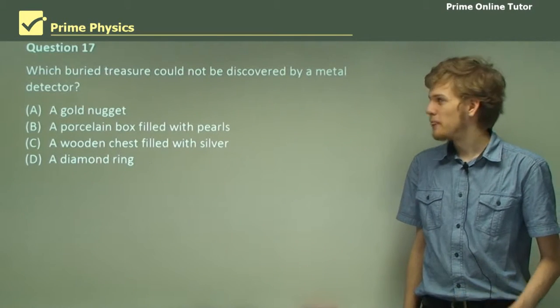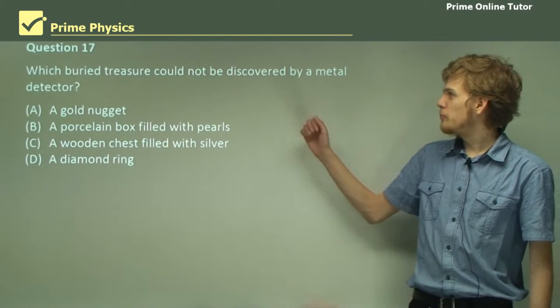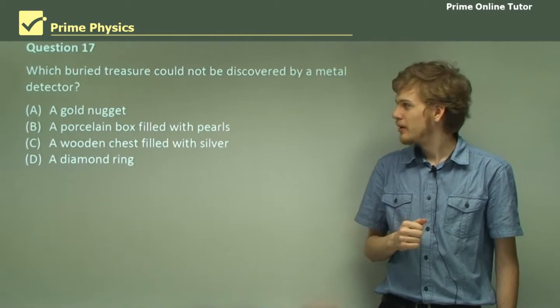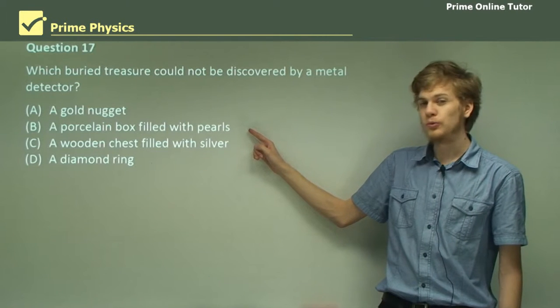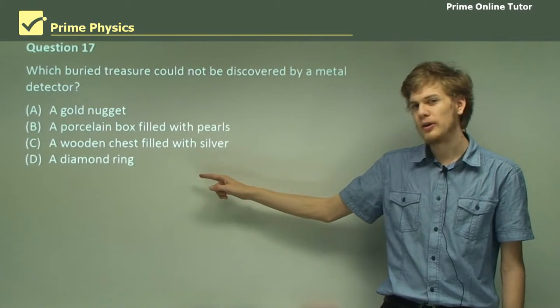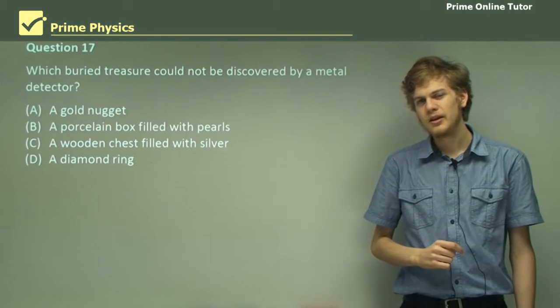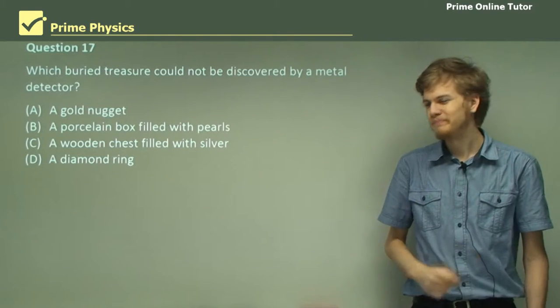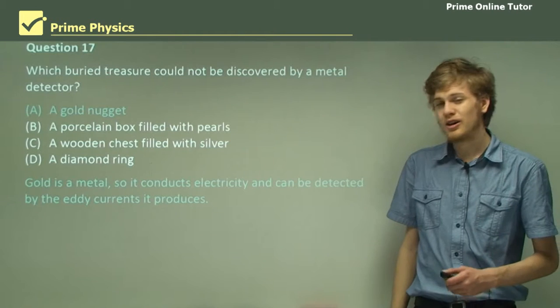Question 17. Which buried treasure would not be discovered by a metal detector? A gold nugget, a porcelain box filled with pearls, a wooden chest filled with silver, or a diamond ring. Let's go through the options.